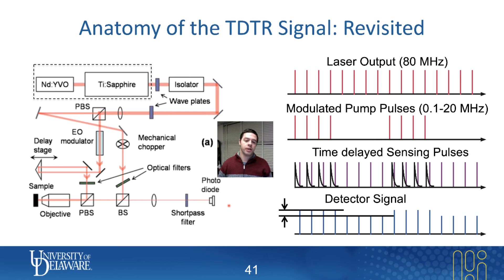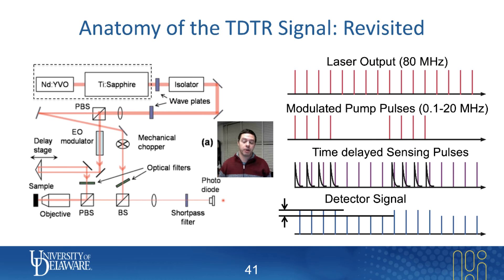We need to make some pretty significant efforts to make sure that does not happen. We cannot allow pump beam to make it back to our photodiode. If even one part in a million makes it back to our photodiode, that will affect our experiment, because one part in a million is about the level of detector signal that we would like to be able to detect to have an accurate measurement. So we really need to do a good job at not allowing pump beam to get back to our photodiode.